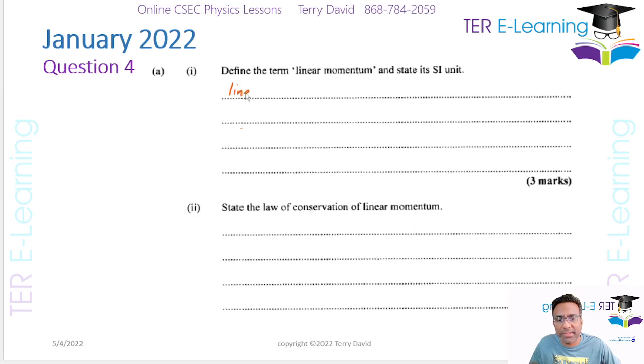In question 4, the first part asks us to define linear momentum and state its SI units. Linear momentum is the product of a body's mass and velocity. We normally write that as P equals M multiplied by V.